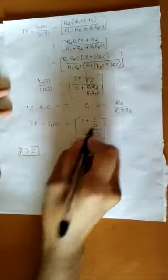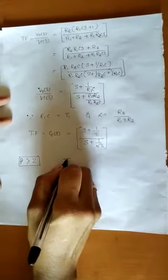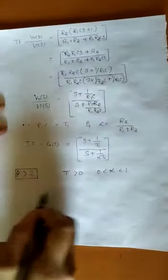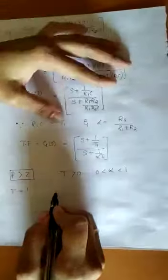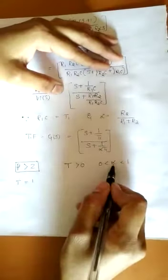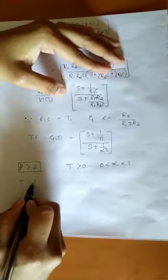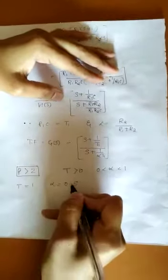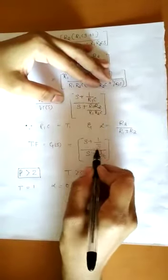To prove this statement, we assign values to T and α. Consider T > 0 and α lying between 0 and 1. Let T = 1 and α = 0.5. The zero is S = −1/T = −1/1 = −1. The pole is S = −1/(α·T1) = −1/(0.5 × 1) = −2. The zero is at −1 and the pole is at −2, so the pole is greater in magnitude than the zero.